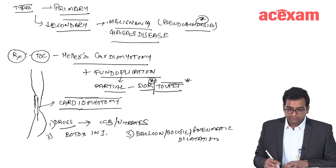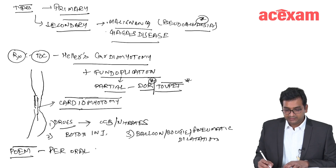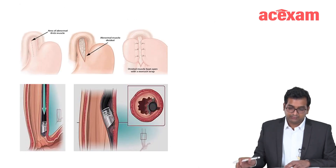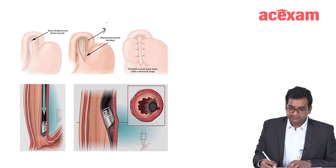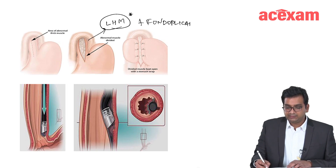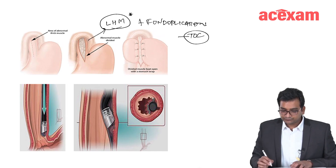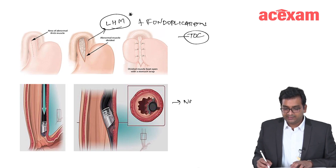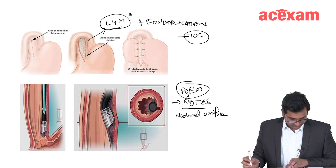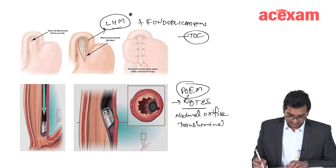Nowadays there is also an endoscopic procedure called POEM — per oral endoscopic myotomy. This is a type of NOTES surgery, which is natural orifice transluminal endoscopic surgery.